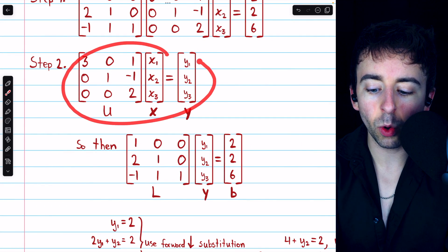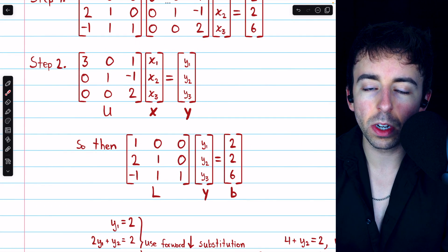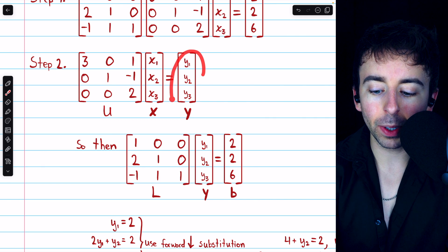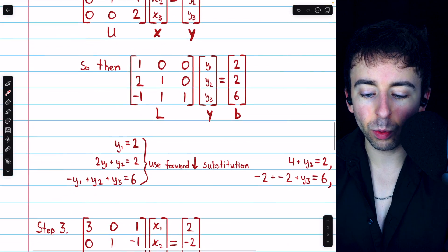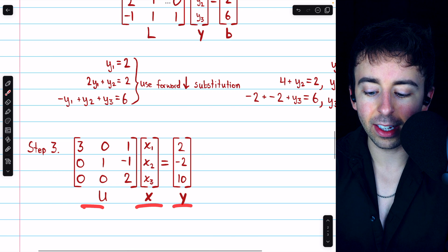Finally, in step 3, we take this equation that defined Y, U times X equals Y, and replace Y with its known values. Thus, we have U times X equals Y.